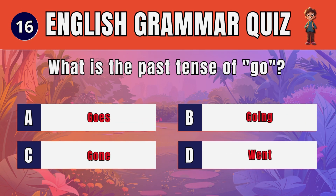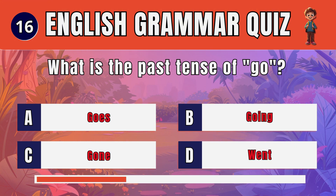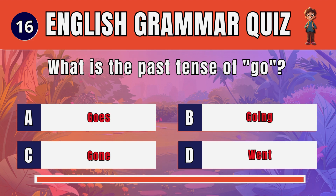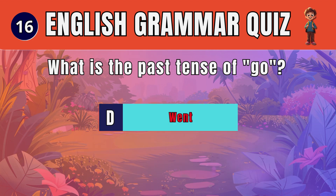Question 16. What is the past tense of go? The answer is: D. Went.